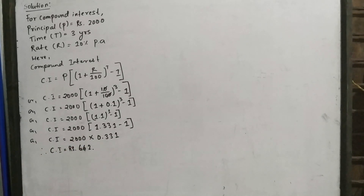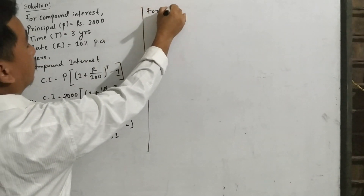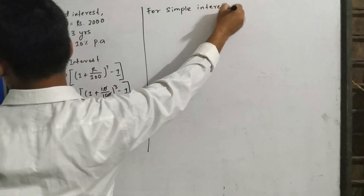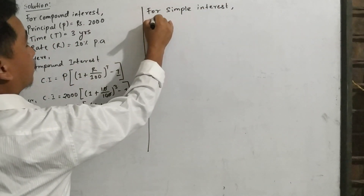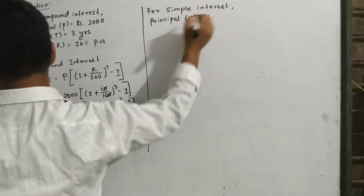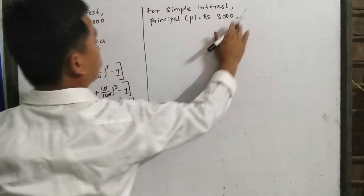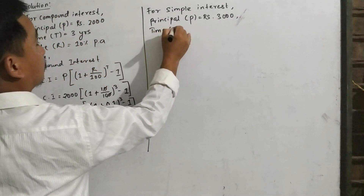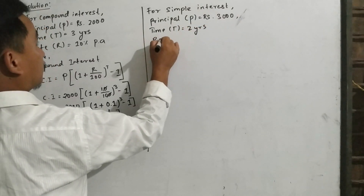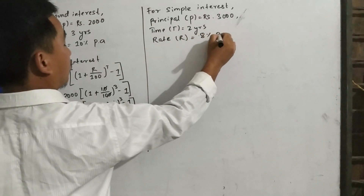Now for simple interest: principal P is equal to rupees 3000, time T is equal to 2 years, and rate R is equal to 8% per annum.